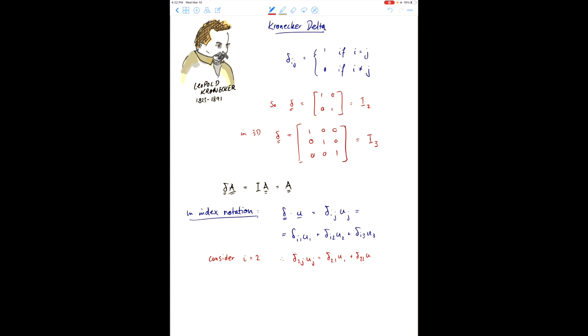And from our definition of the Kronecker Delta up here, we realize that the diagonal elements are 0. So, we just find delta 2j uj is equal to u2.